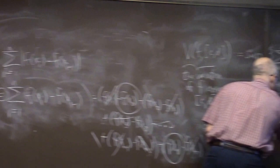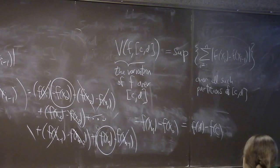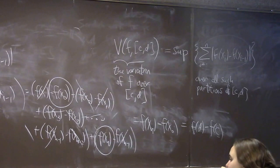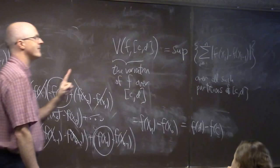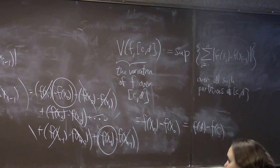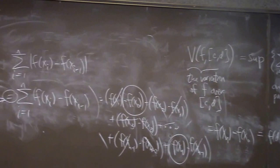And that's f of d minus f of c, because x_n equals d and x_0 equals c. So it doesn't matter what the partition is. The summation gives you the exact same thing. So this set that we're taking the sup of just has one number in it. So the sup is that one number. So for monotone functions, this complicated definition is actually trivial.